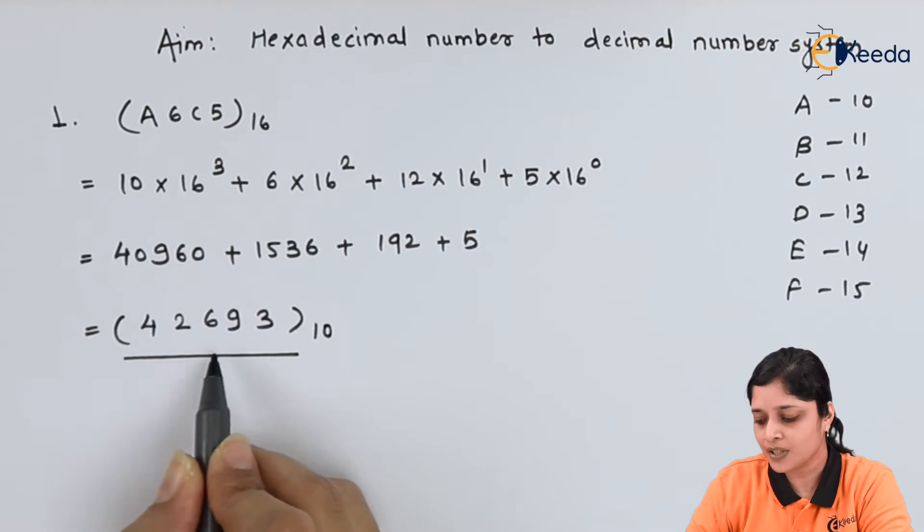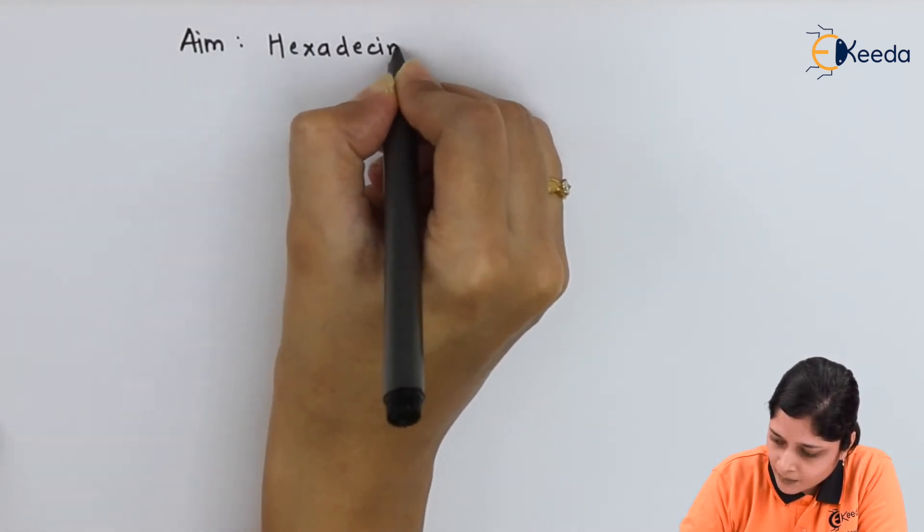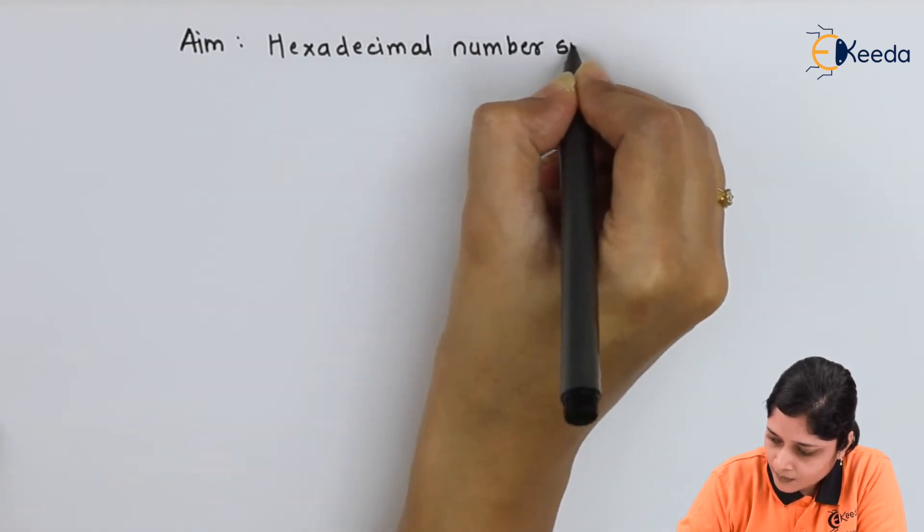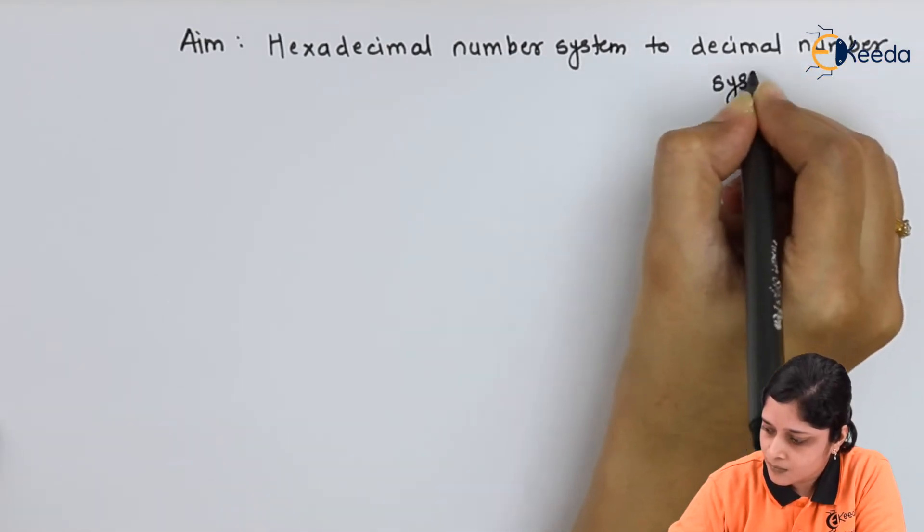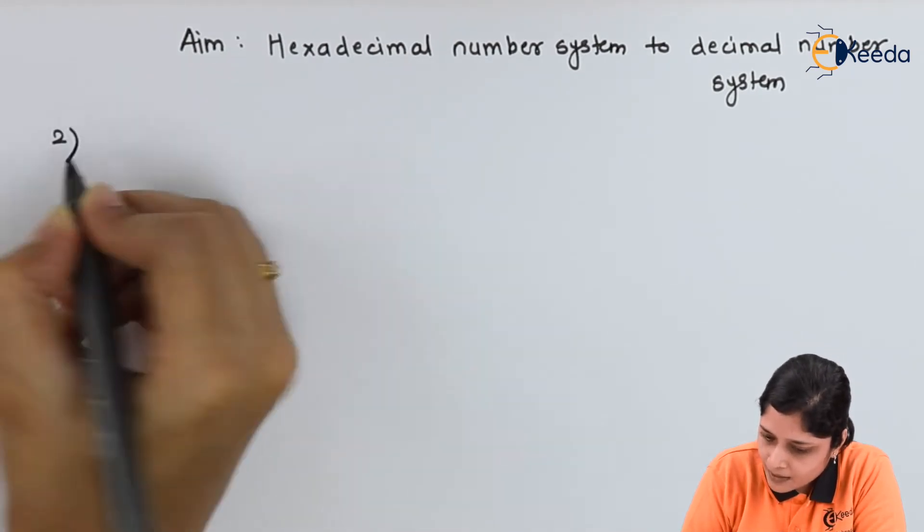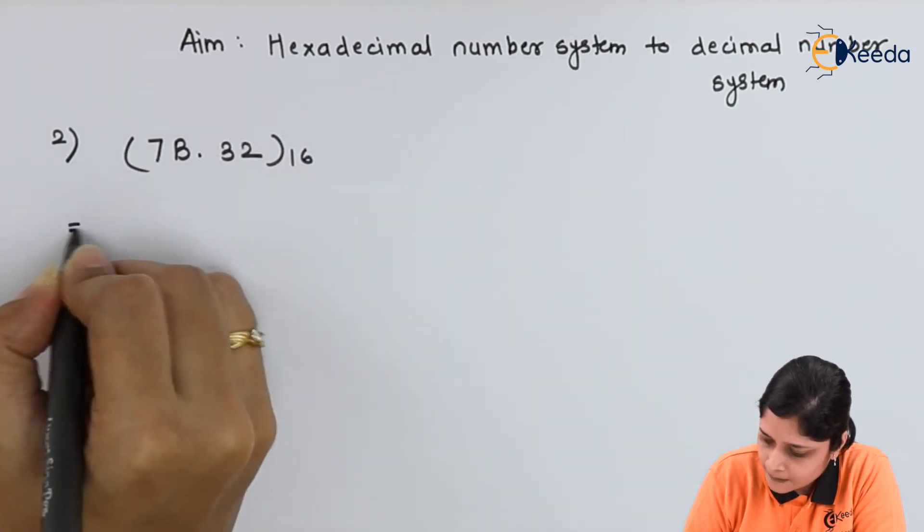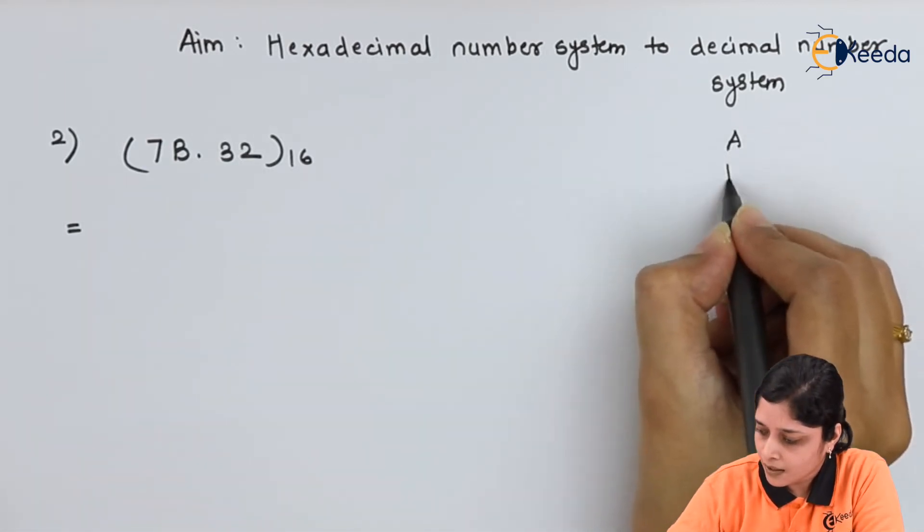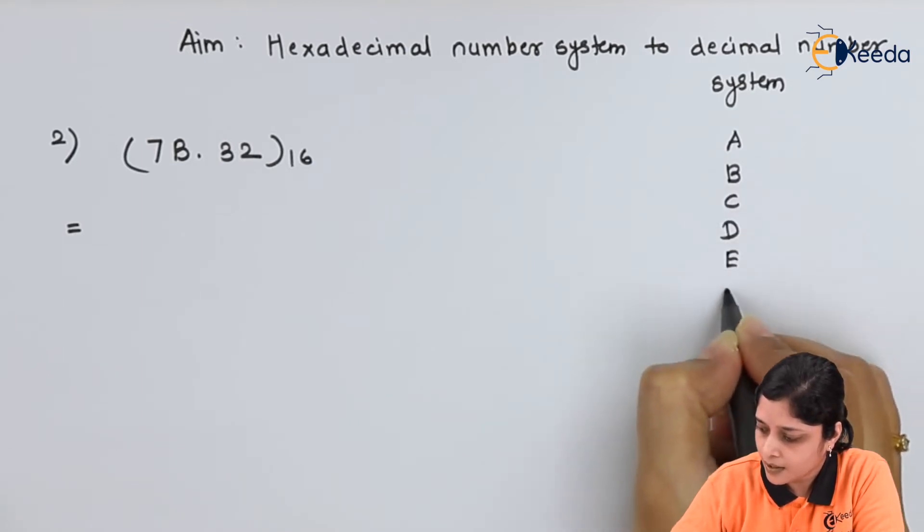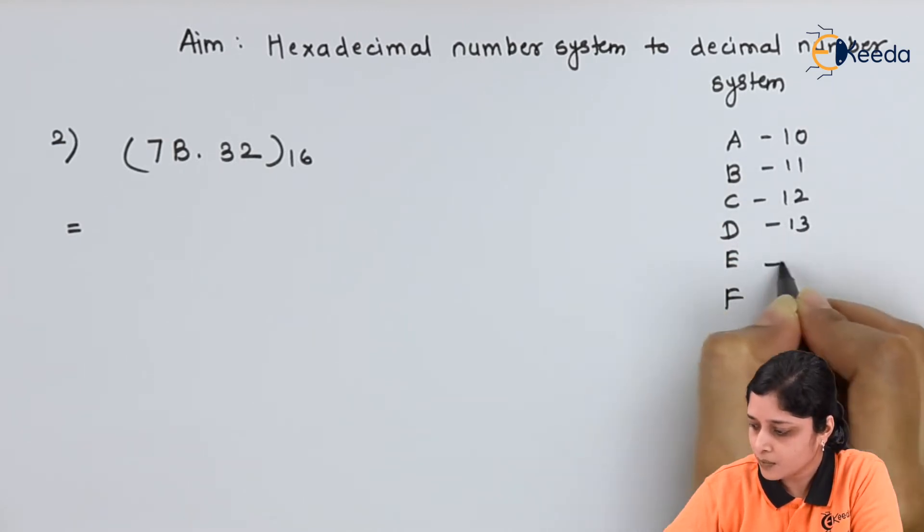Now second example, write down aim: hexadecimal number system to decimal number system. Your second example is (7B.32)₁₆. So how you will solve? You should know the decimal for B. Hexadecimal number A, B, C, D, E, and F. Value of A is 10, 11, 12, 13, 14, 15. So value of B is 11.